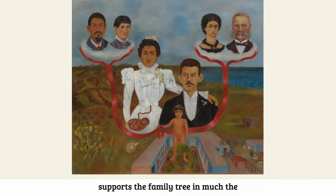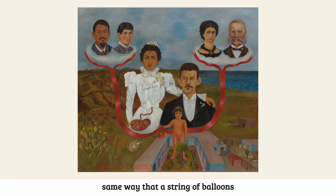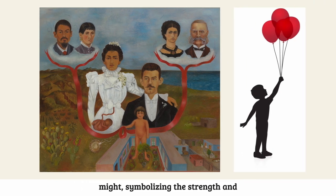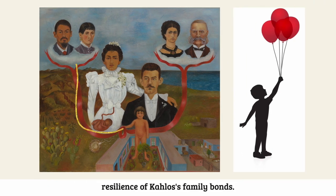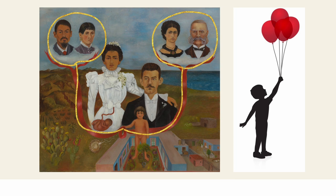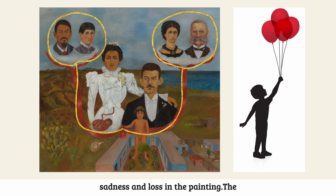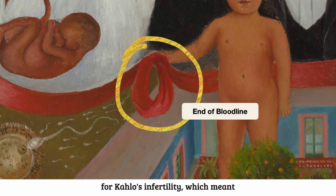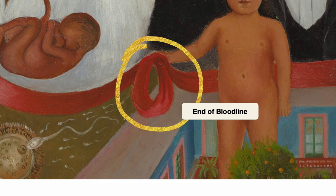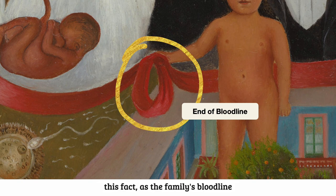The ribbon supports the family tree in much the same way that a string of balloons might, symbolizing the strength and resilience of Kahlo's family bonds. However, there is also a sense of sadness and loss in the painting. The loop in the bloodline may be a symbol for Kahlo's infertility, which meant that the end of her family's bloodline was inevitable. The painting seems to convey Kahlo's guilt and sadness over this fact, as the family's bloodline literally ends with her.